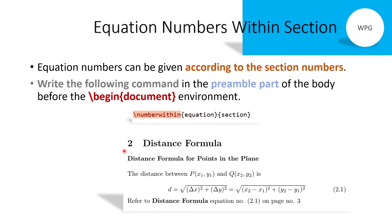Now the equation number is according to the section number. Here the section is 'Distance Formula' and the section number is 2, and this is the first equation of that section, so the equation number becomes 2.1. The reference 2.1 also appears correctly in the text.